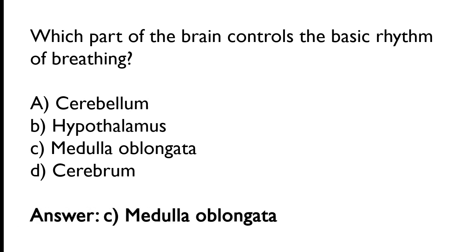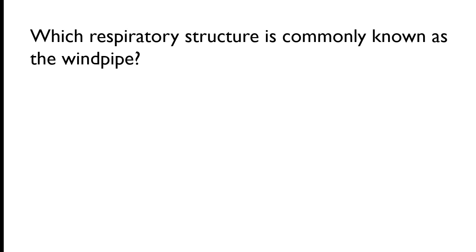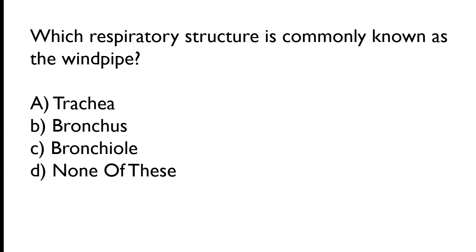The correct answer is option C: medulla oblongata. The medulla oblongata is the part of the brain that controls the basic rhythm of breathing. Which respiratory structure is commonly known as the windpipe? Trachea, bronchus, bronchiole, none of these. The correct answer is option A: trachea, which is commonly known as the windpipe.